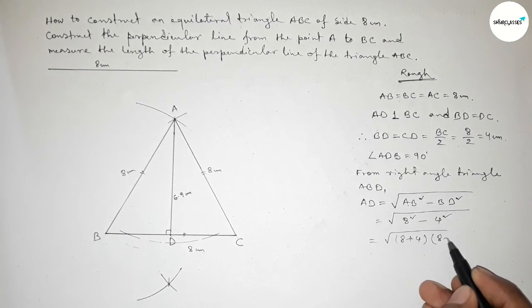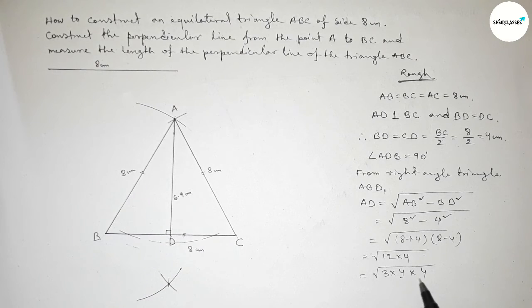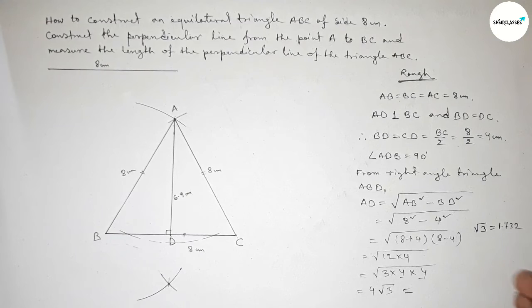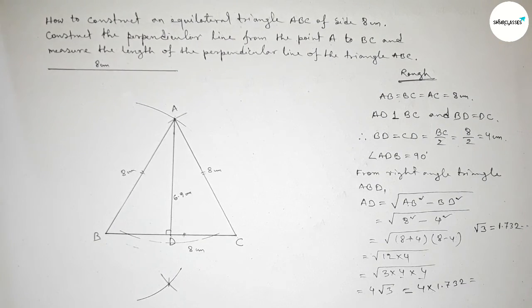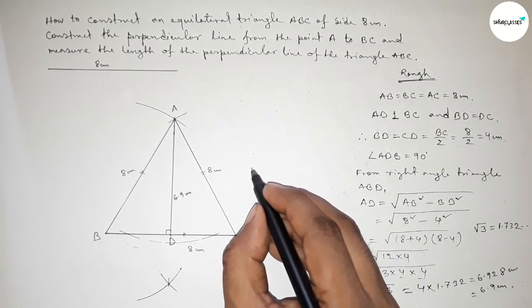Applying the formula a squared minus b squared equals (a plus b)(a minus b), this gives 12 times 4 under the root. So root over 3 times 16, which equals 4 root 3. We know that root 3 equals 1.732, so multiplying this gives approximately 6.928 centimeter, which we take as approximately 6.9 centimeter.